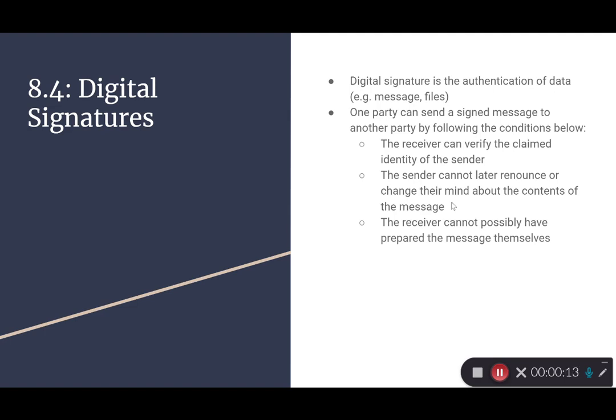One party can send a signed message to another party by following the conditions below. The receiver can verify the claimed identity of the sender. The sender cannot later renounce or change their mind about the contents of the message. And the receiver cannot possibly have prepared the message themselves.